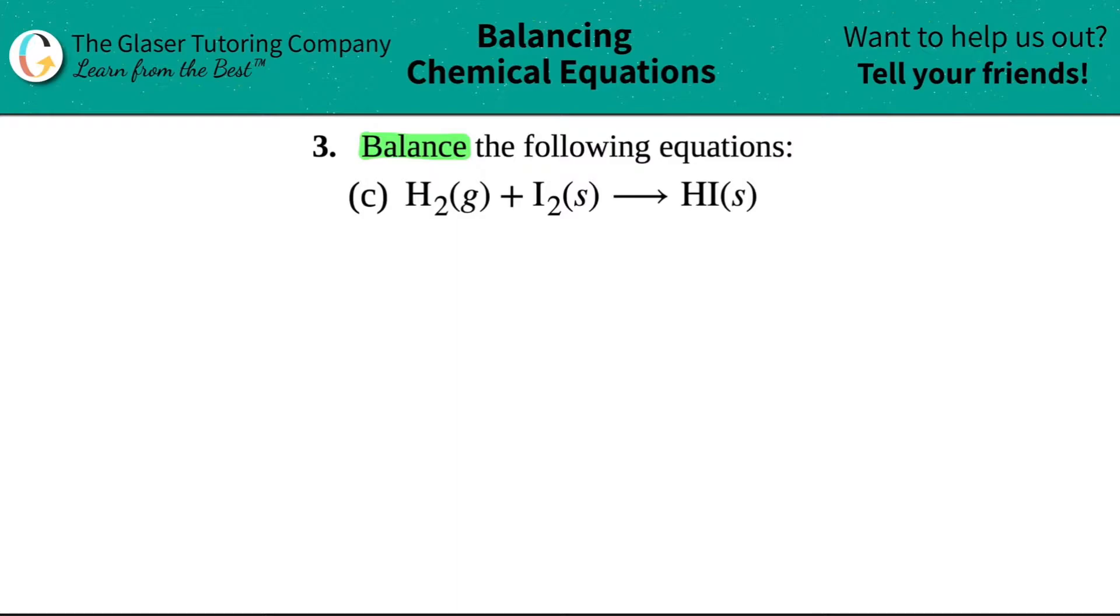I'm just going to say H₂ plus I₂ will yield HI. When you're balancing equations, we could care less about what states these are. They mean absolutely nothing to us.